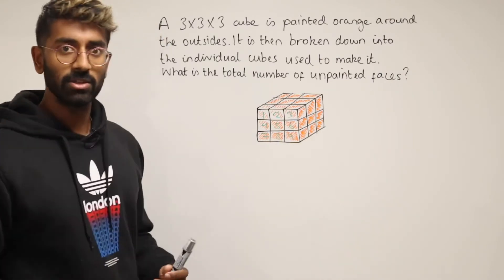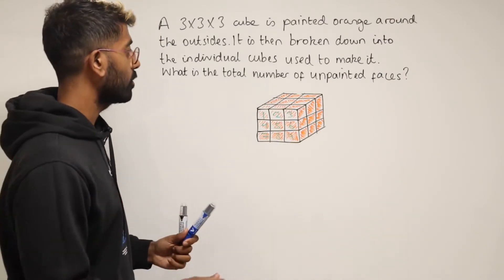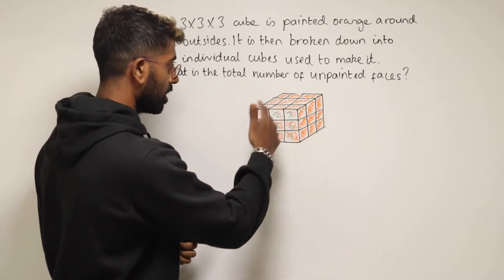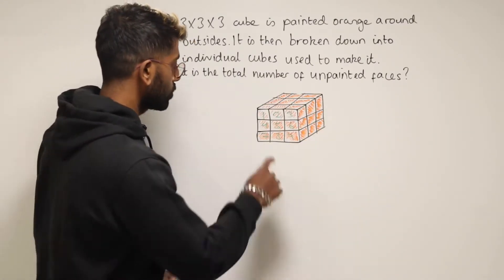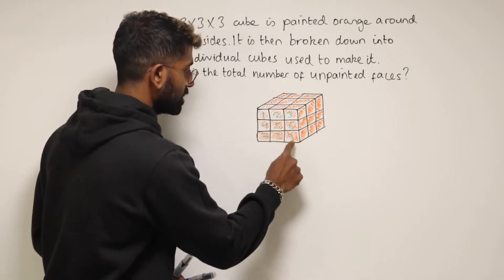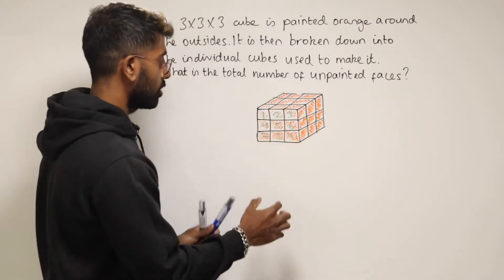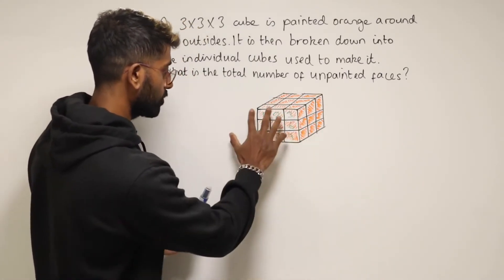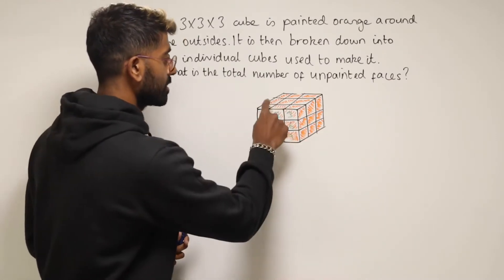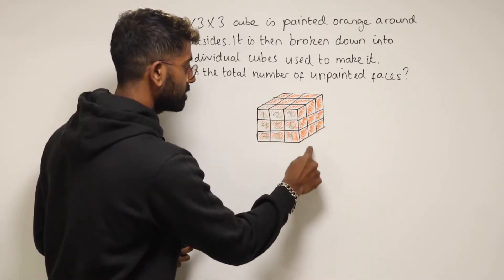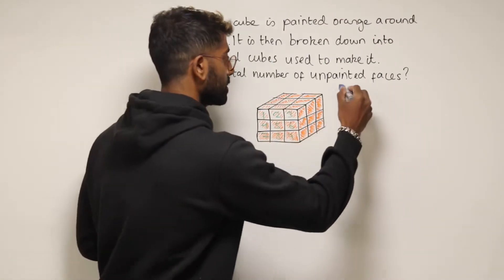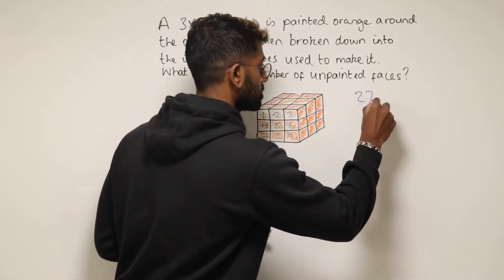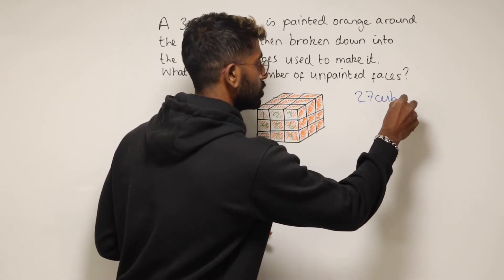The best way to look at this question is this. First of all, how many little cubes are there used to make the one big cube? As you can see here, I've counted up how many cubes there are on the very front. We've got nine cubes. There'll be another nine behind it and then another nine behind that. So in total, there's going to be 27 cubes.